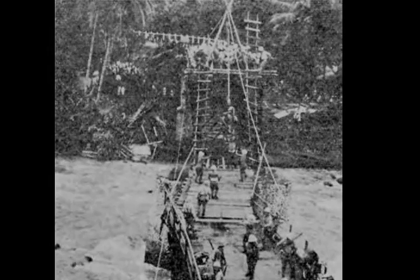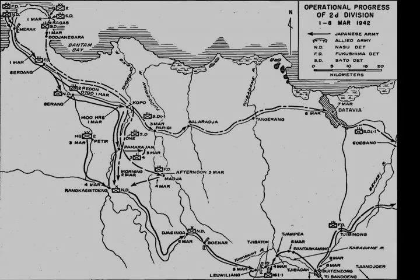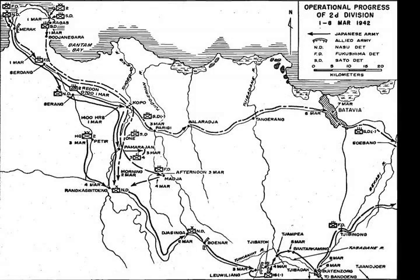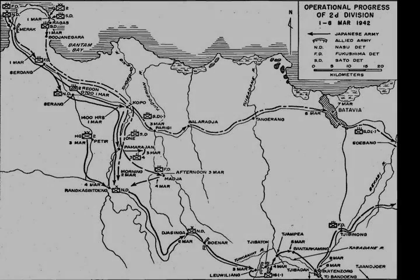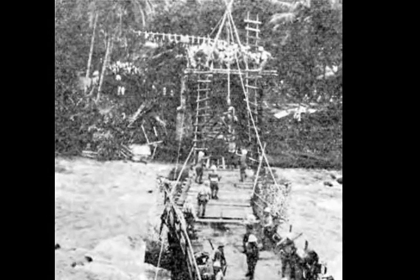This particular detachment was assigned the task of advancing rapidly to secure river crossings and capture the city of Buitenzorg, to cut off potential Dutch retreat from Batavia to Bandung. The total number of Japanese soldiers landing in Java was roughly 25,000, opposing a similar number of Dutch soldiers, and they did not face significant resistance in their landing operations.